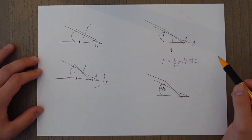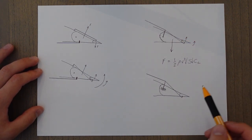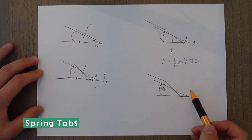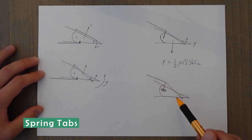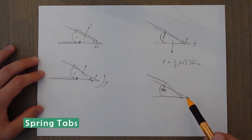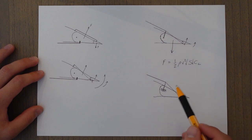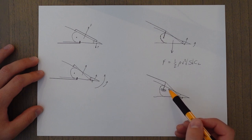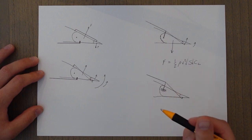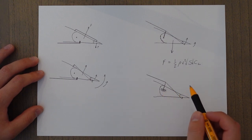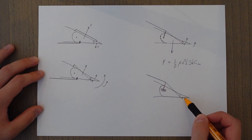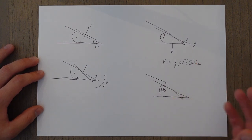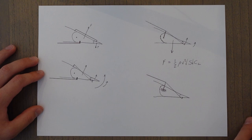One problem with a servo tab is that at slow speeds, the deflection of this small servo tab might not be strong enough to actually deflect the whole control surface — it's already a small area and at slow speed the force may not be sufficient. So one way to get around this is to use a spring tab. The spring tab controls the control surface directly below a certain force threshold, and then when it gets too powerful and too much effort to control, the spring activates the tab and the tab flies the control surface in the appropriate direction.